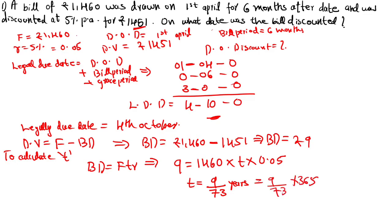To convert years into days, multiply by 365. Using a calculator, T is approximately equal to 45.09 — take it as 45. So T is equal to 45 days. Now, unexpired time is equal to 45 days. Then what is the discounted date? Discounted date means — for example, if date of drawing is 9-4-2010 and legally due date is 9-6-2010, that means two months. Before the legally due date the bill is discounted.